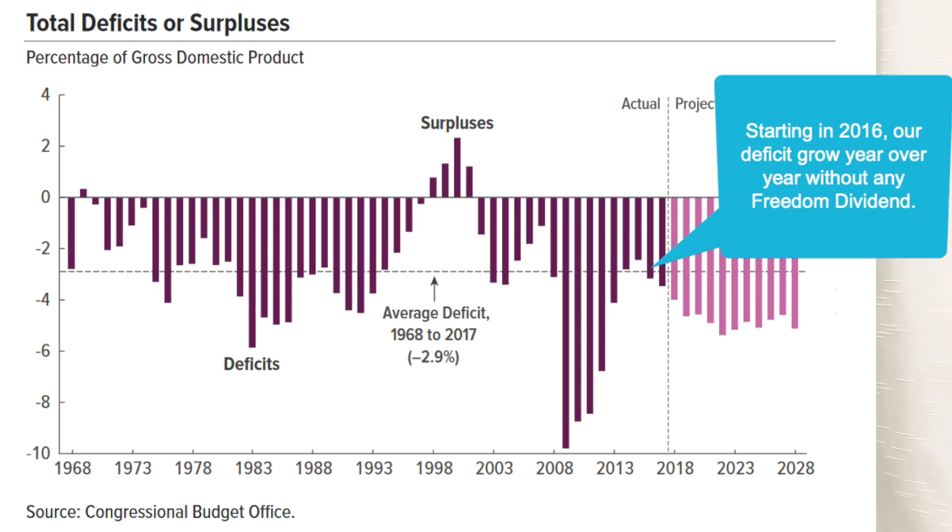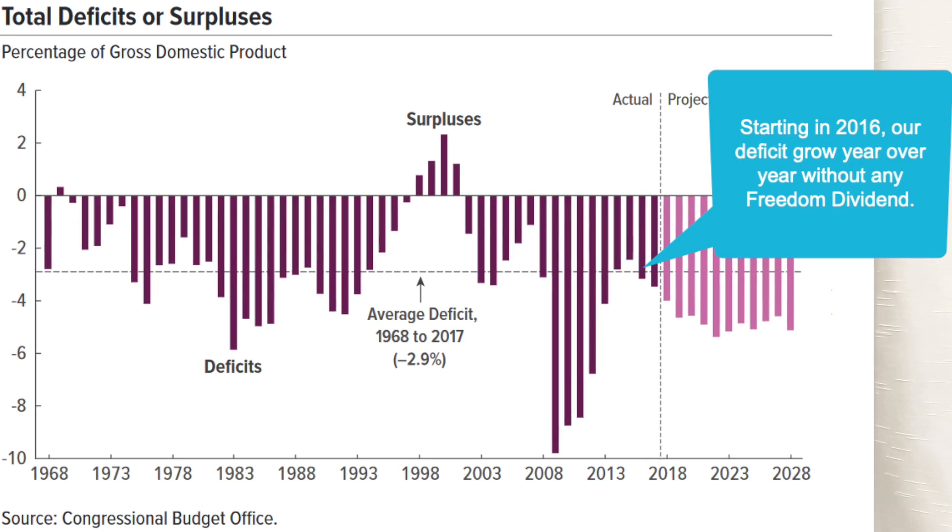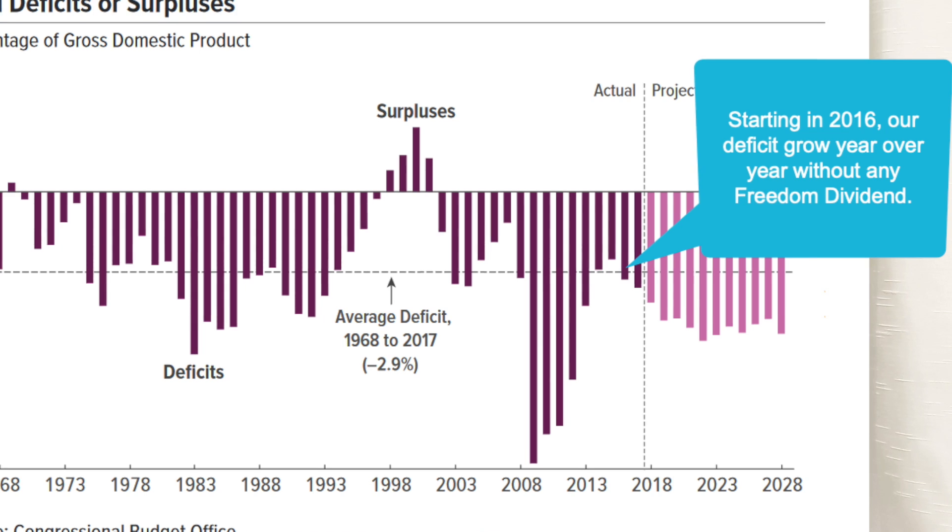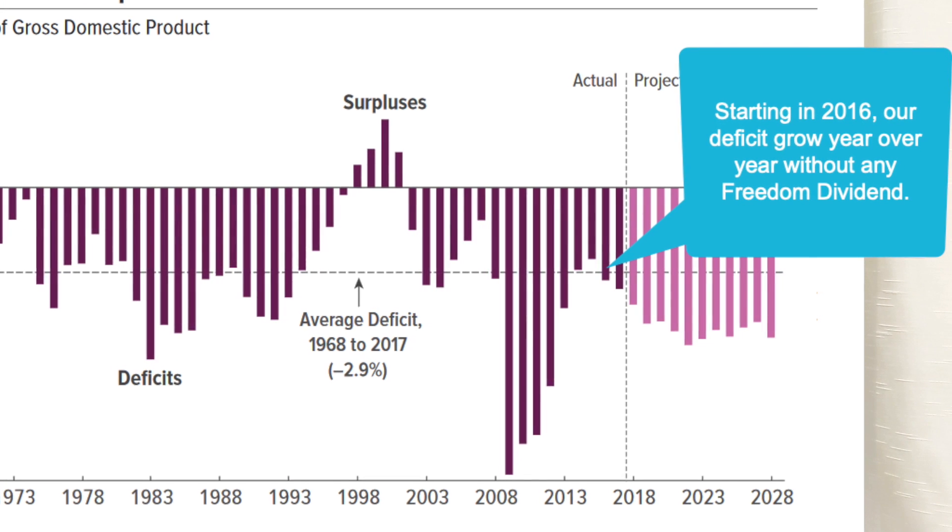Hello nerds! Nerds for Yang. This is a video that only nerds could love. This is about math and the freedom dividend, or Andrew Yang's version of universal basic income. What we're going to do today is really go over the question of how in the world can any responsible person propose such a thing? It would clearly cost way too much money and will bankrupt the whole country. So today we're going to go into how he pencils out these numbers and what you need to believe for these numbers to kind of add up.